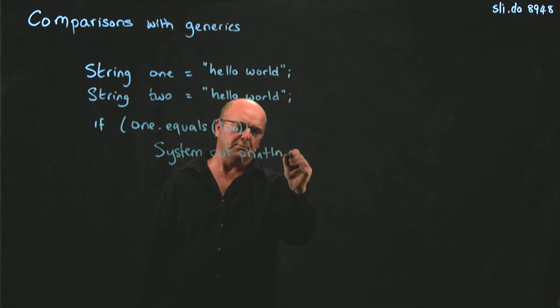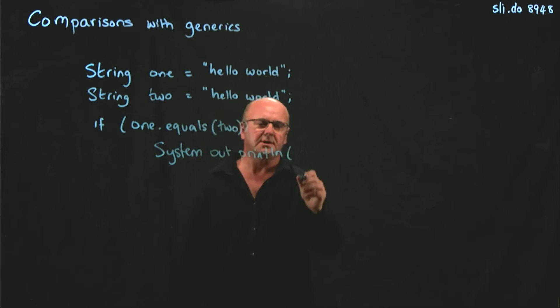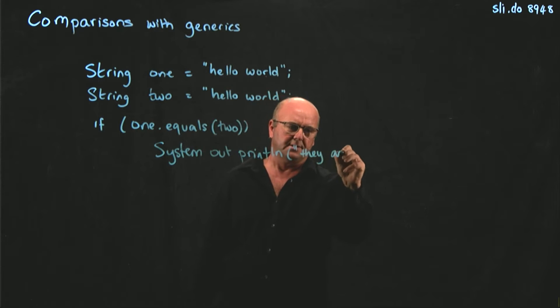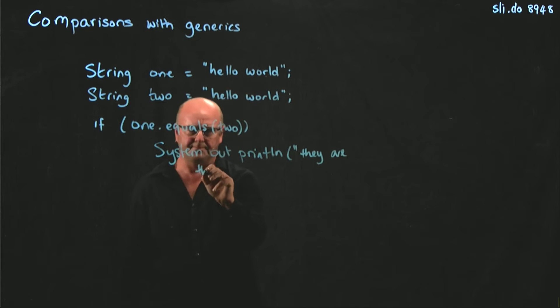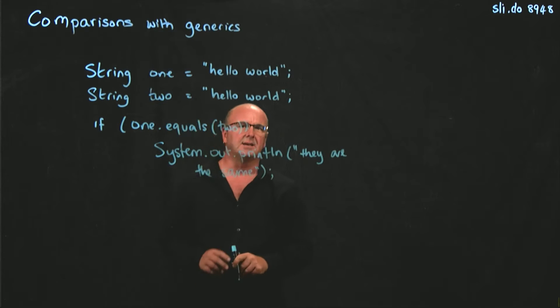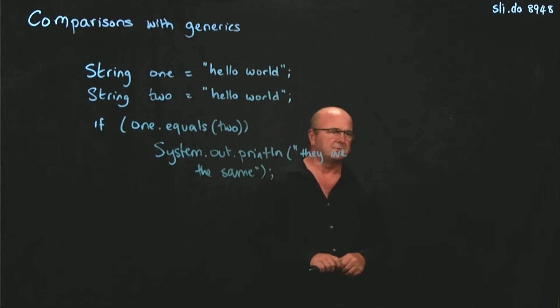String one equals "hello world". String two equals "hello world". If they're equal, we're going to print out that they are the same. It's pretty simple Java code.